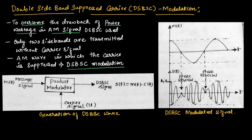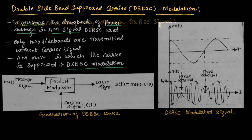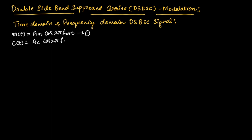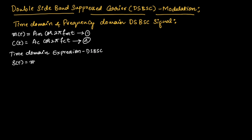Now let us derive the expression in terms of time domain and frequency domain. Let us consider the modulating signal or message signal M(t) equal to Am cos(2π fm t) — equation 1. Let us consider a carrier signal C(t) equal to Ac cos(2π fc t) — equation 2. We can write the time domain expression for DSBSC signal as S(t) equal to M(t) multiplied by C(t).